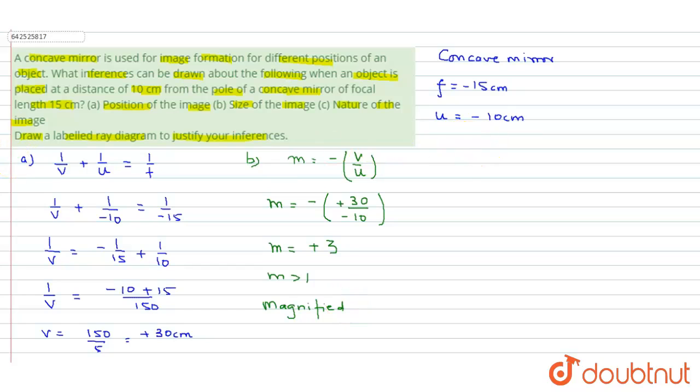The last part is asking about the nature of the image. The nature of the image is, since m is plus, plus means the image formed is virtual. Virtual images are always erect. And since the value of m is more than 1, it is magnified.